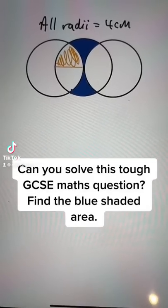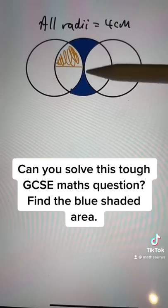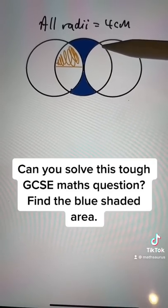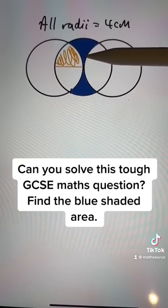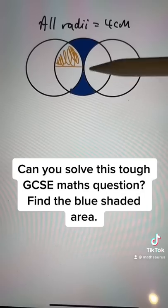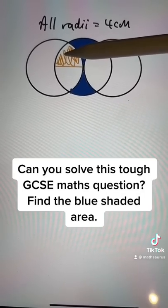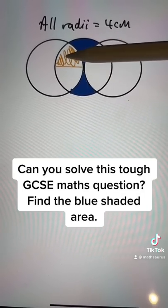I heard some of you were stuck on this question. Let me show you how to do it. We want to find the blue shaded area if all of these are circles with radius 4. We're going to think of this as a circle in the middle minus these four orange areas, four copies of this orange area.